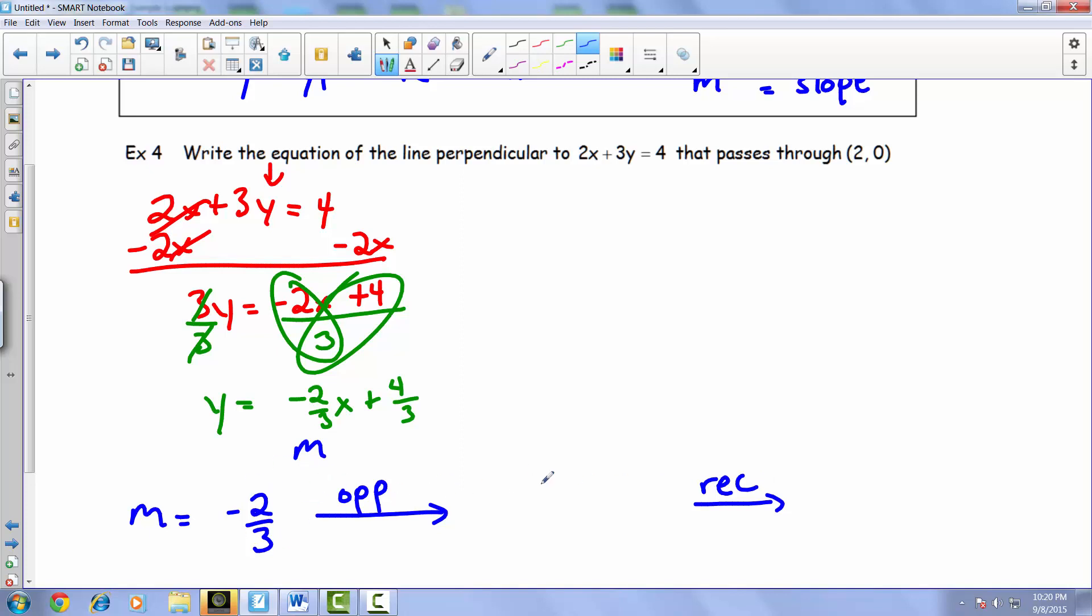The opposite of negative two-thirds comes out to be positive two-thirds. For the reciprocal, that's just the flip of your fraction, which comes out to be 3 on top and 2 on the bottom. So we're just literally flipping those numbers. This slope, three-halves, is what we're going to use for our slope that passes through this point and is an equation that is perpendicular with this other equation.